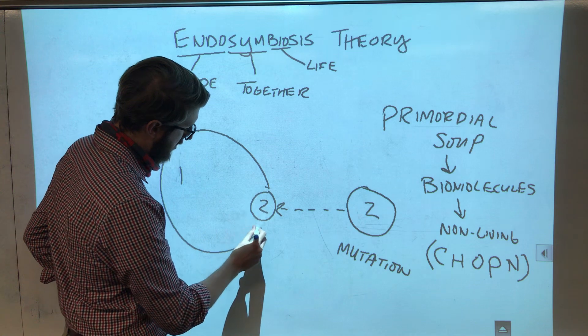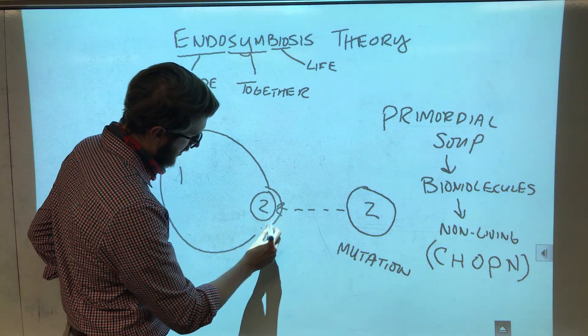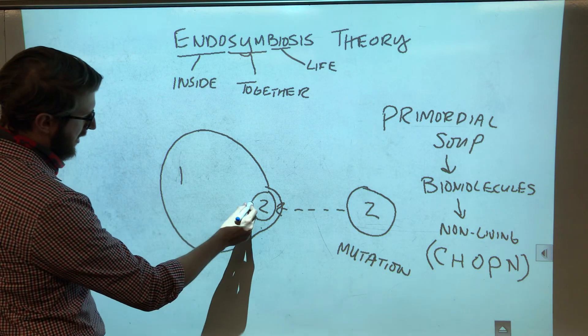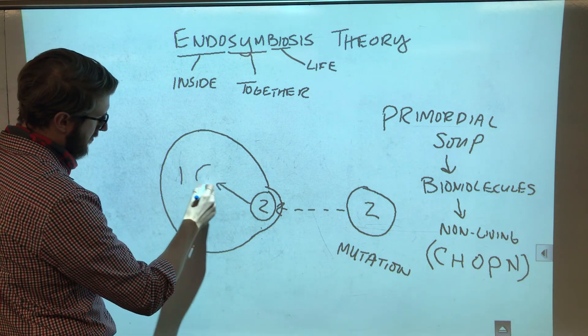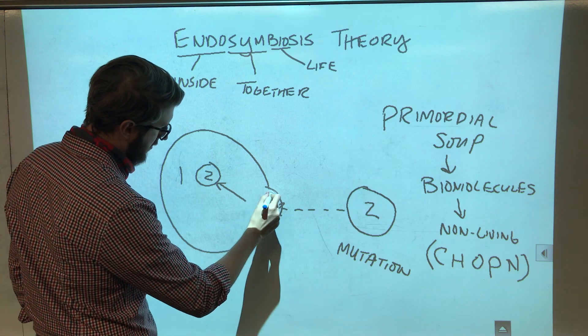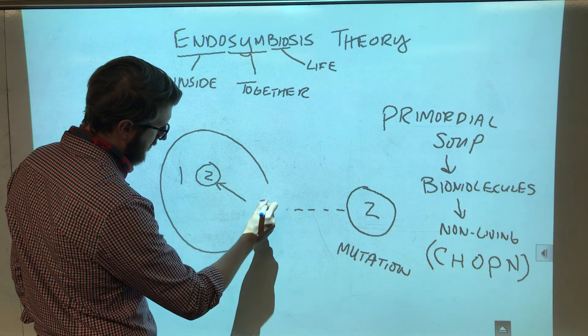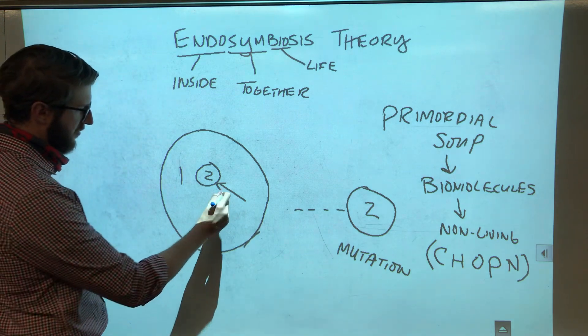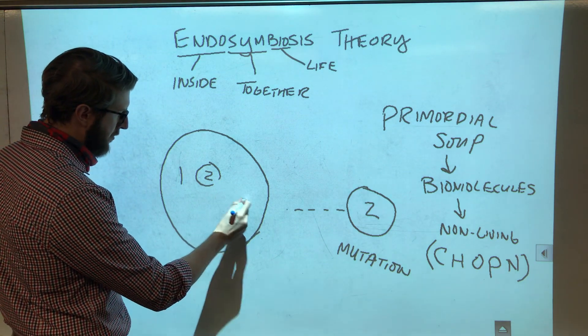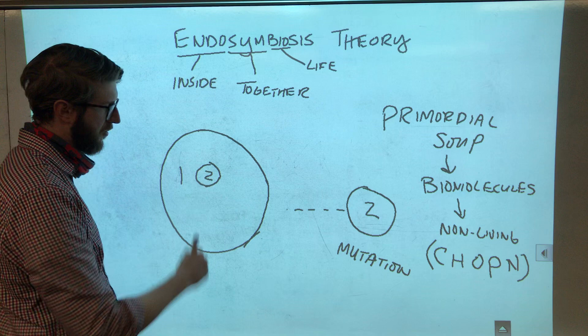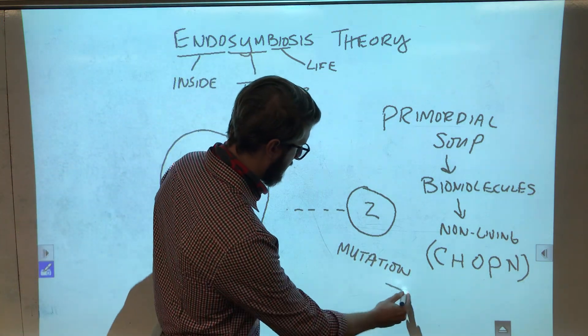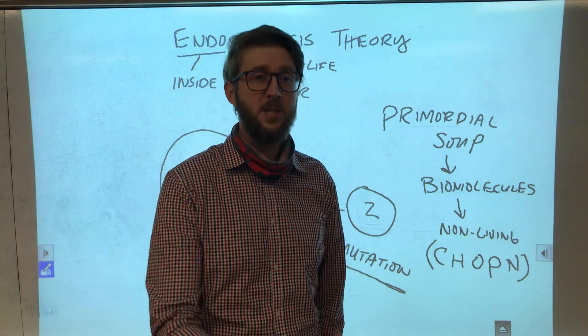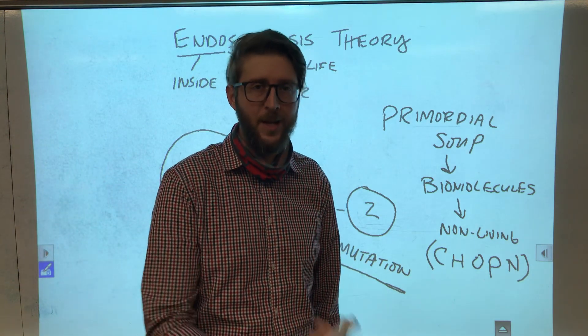So big cell one ingests little cell two. And the plan is to take big cell two and eat it just like it does all the other smaller cells that are floating around. But because little cell two has this mutation that makes it extra resistant to being eaten and digested, it just sticks around.